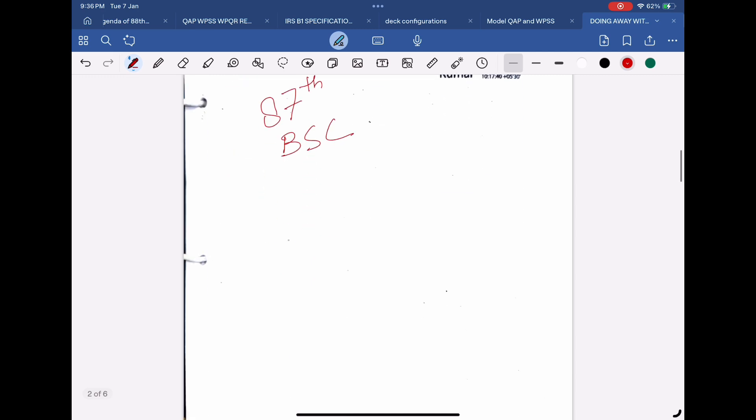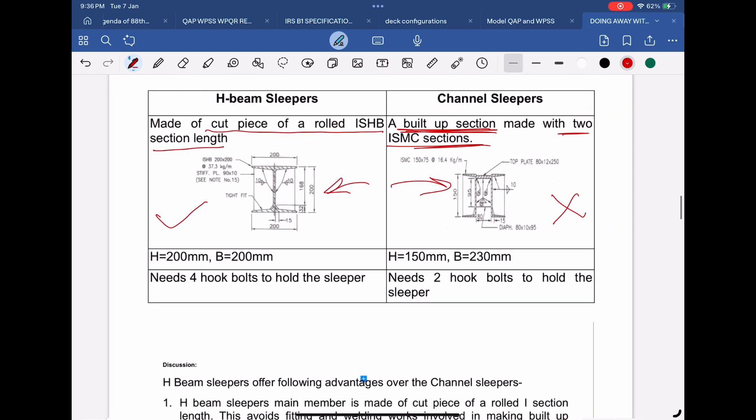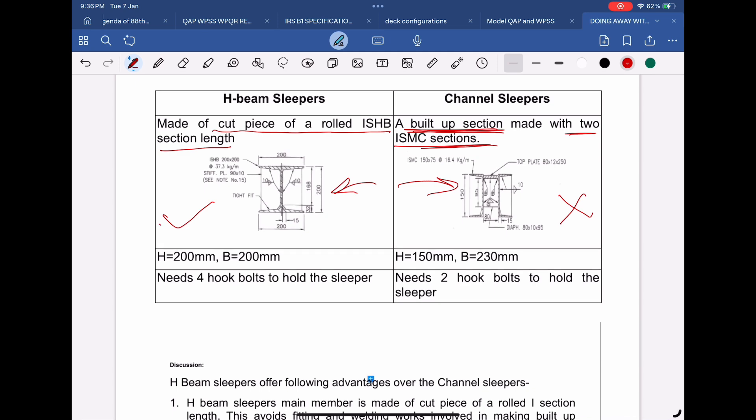The background of this decision was the fact that H-beam sleeper is made of cut pieces of a rolled ISHB section. On the contrary, channel sleepers are made as a built-up section by connecting two ISMC sections together by welding. Therefore, quality of H-beam sleepers is better as there is very less fabrication and welding process involved. Adoption of rolled ISHB section eliminates the possibility of weld defects in main member during manufacturing as well as during service.